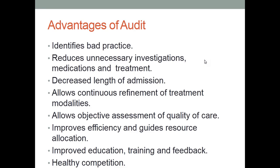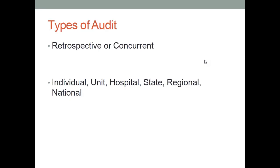What are the types of audit? It could be retrospective or concurrent — concurrent and prospective mean the same thing. It could be individual-based, unit-based, hospital-based, state-based, regional-based, national, or international.